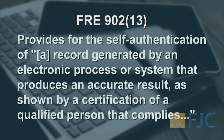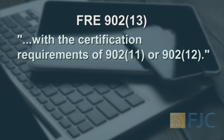New Rule 902 Section 13 provides for the self-authentication of a record generated by an electronic process or system that produces an accurate result, as shown by a certification of a qualified person that complies with the certification requirements of 902 Section 11 or 902 Section 12.